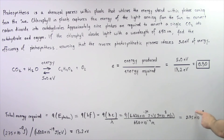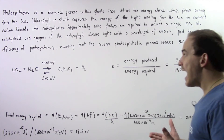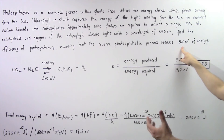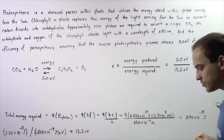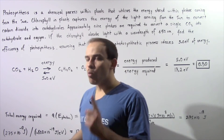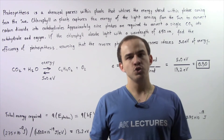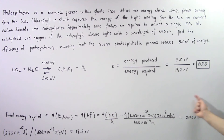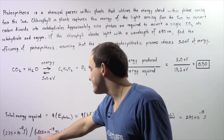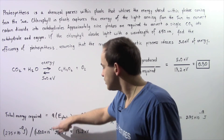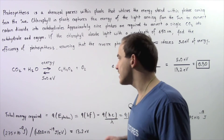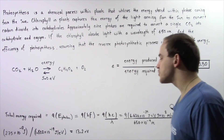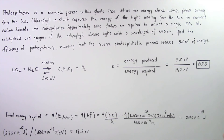That calculation gives 2.75 × 10⁻¹⁸ joules. Now we have to convert joules to electron volts, because the energy released in the reverse process is given in electron volts. Recall that one electron volt equals 1.602 × 10⁻¹⁹ joules. Dividing 2.75 × 10⁻¹⁸ joules by 1.602 × 10⁻¹⁹ joules per electron volt — the joules cancel — and we see that the forward endothermic process requires 17.2 electron volts of energy.